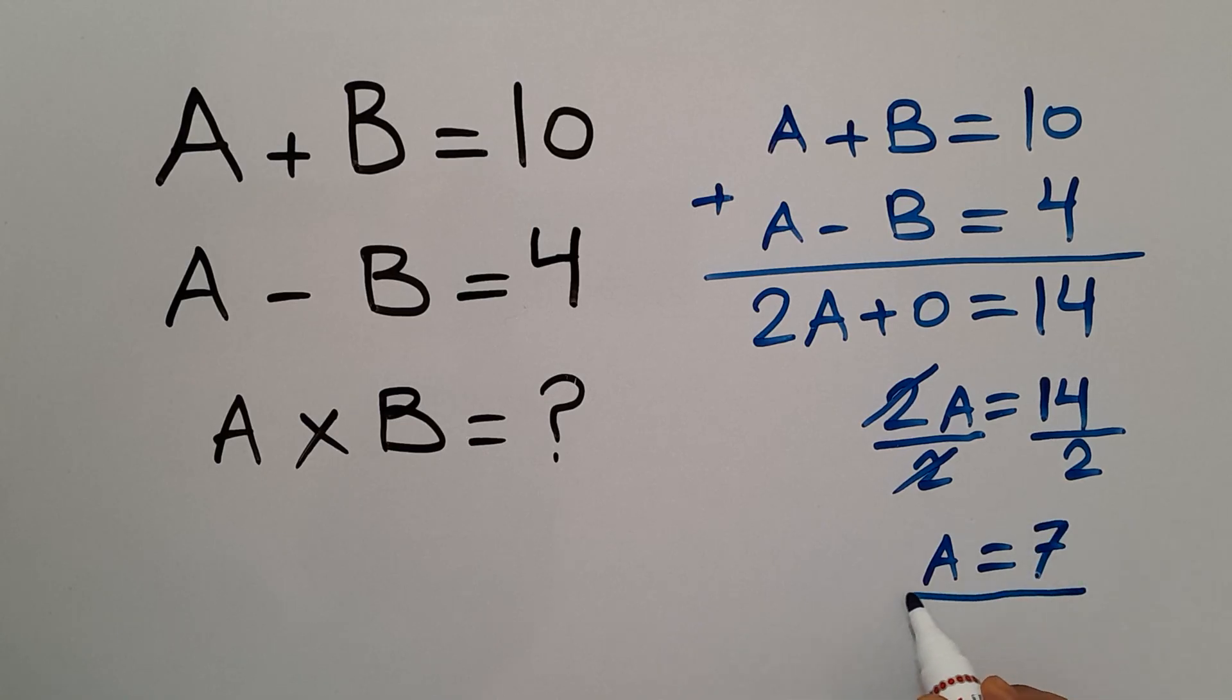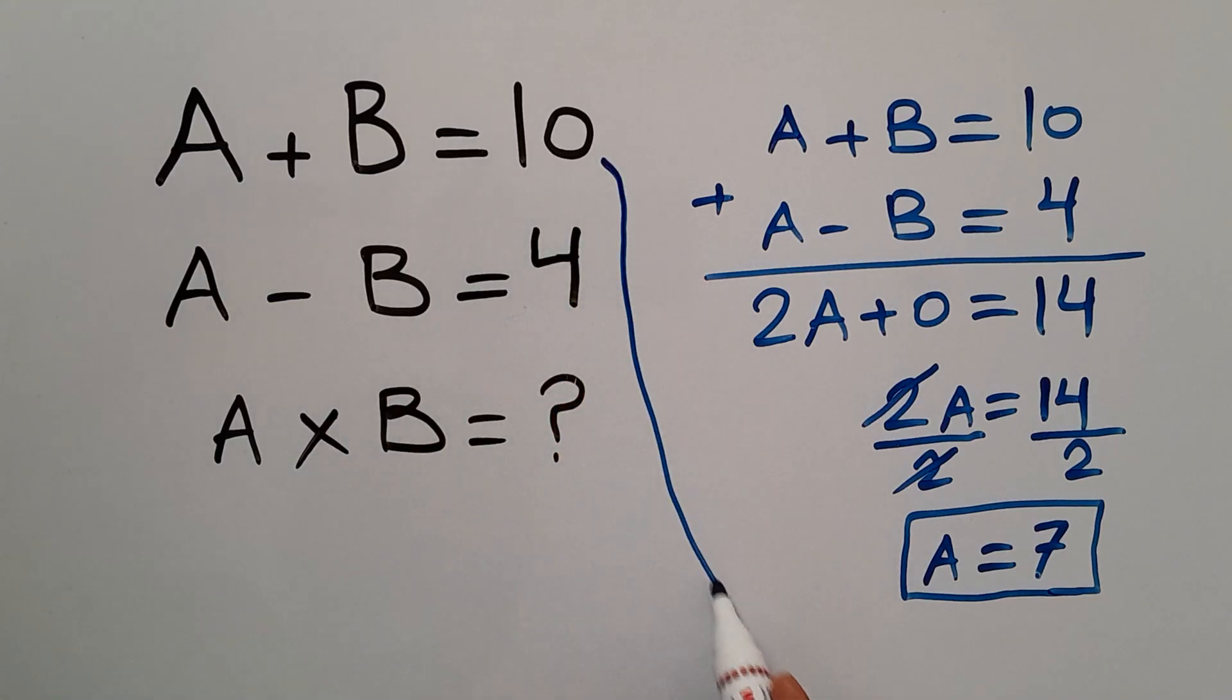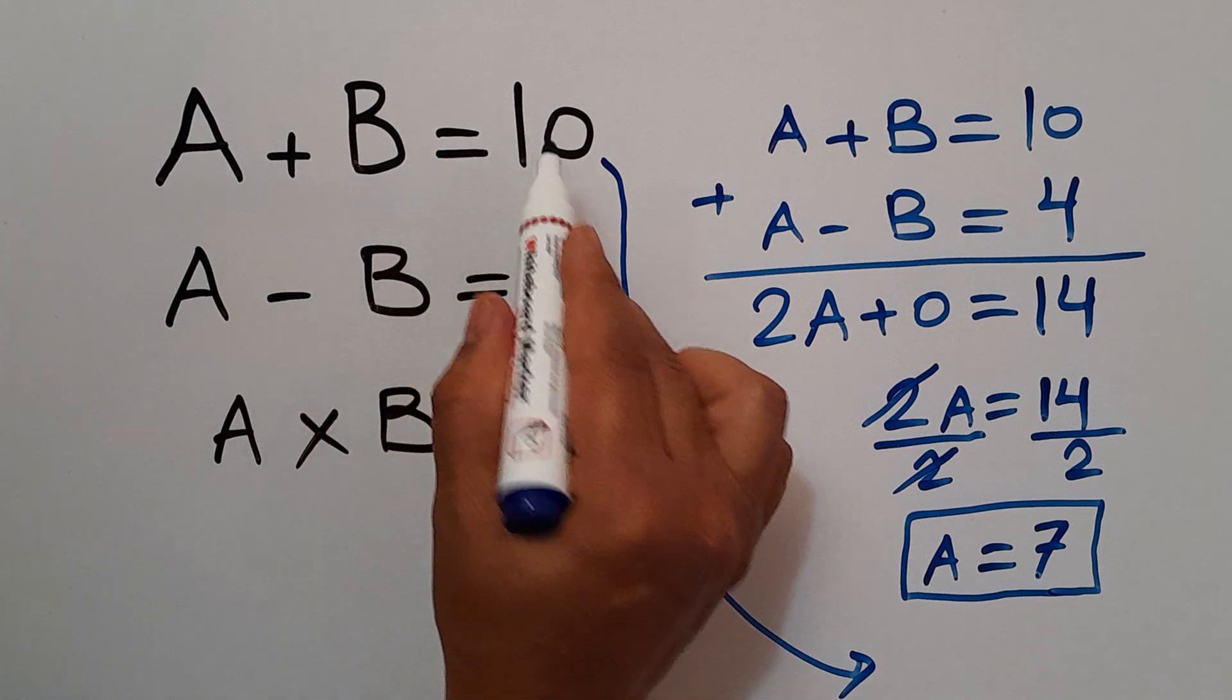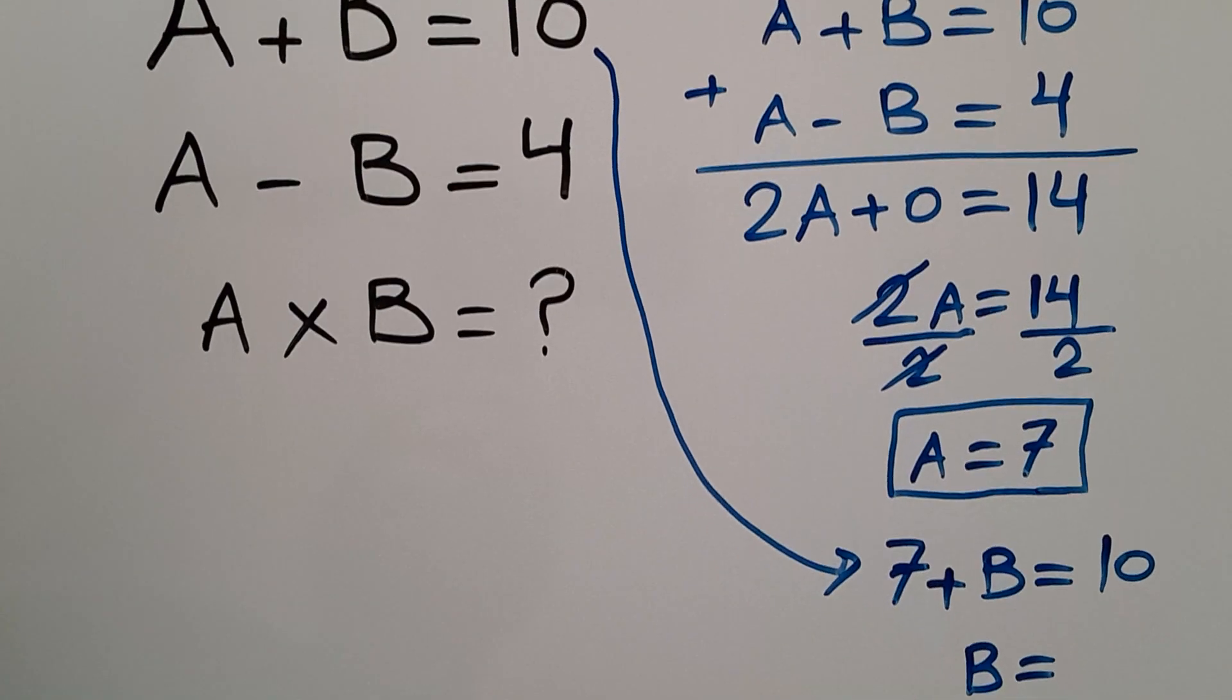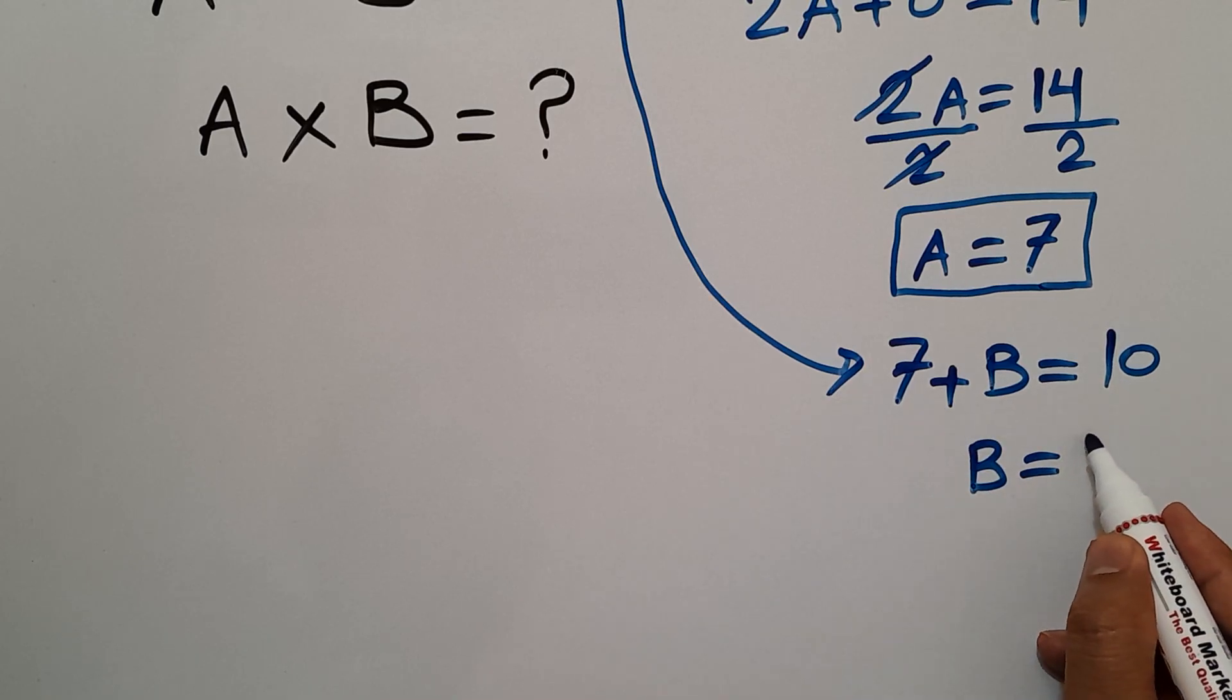A is 7. Now let's plug this value into the first equation. 7 plus B equals 10. That means B will be equal to 10 minus 7 which equals 3.